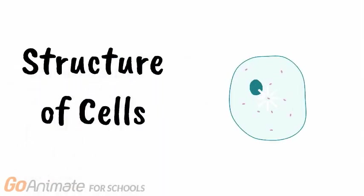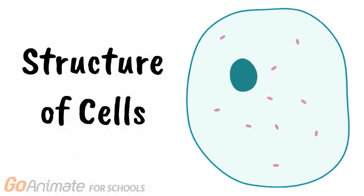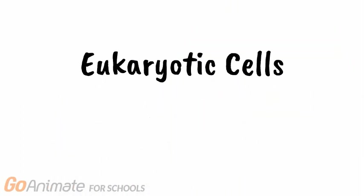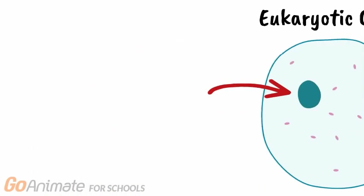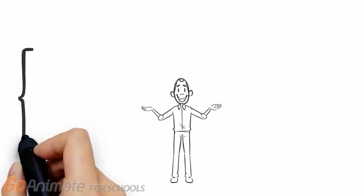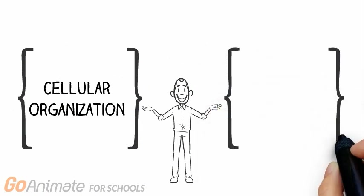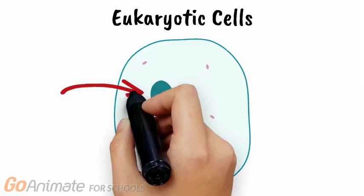Before we dive into this specific process, we need to understand the structure of a cell. Eukaryotic cells are highly specialized cells that are compartmentalized in order to help with proper cellular organization and functioning. Let's start with the nucleus.